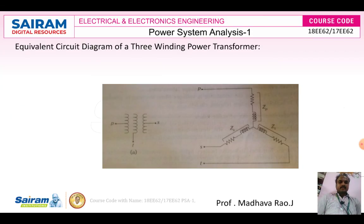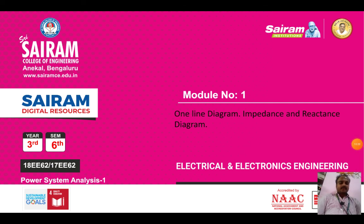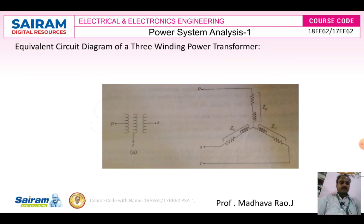Synchronous motors are also represented similarly to synchronous generators. These are the single line equivalent circuit diagrams of the different components used in the power system. In the next video, we will see the one line diagram of different power system components and the impedance and reactance diagrams. This concludes the introduction part of Module 1 and the representation of single line diagrams of various components. Thank you everyone.